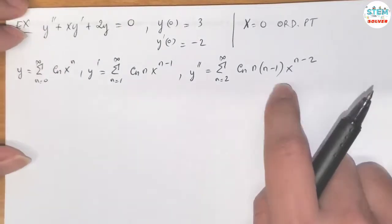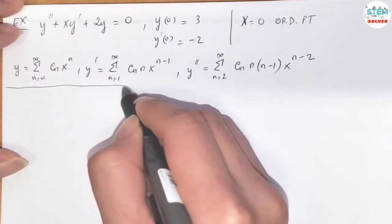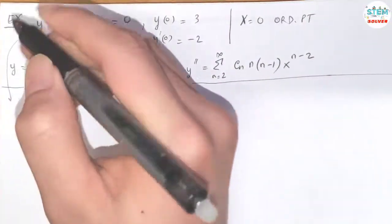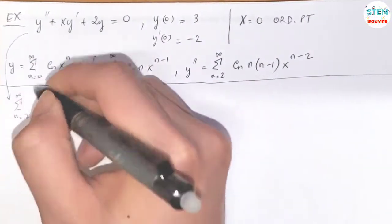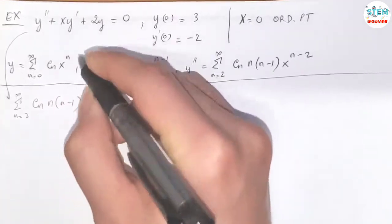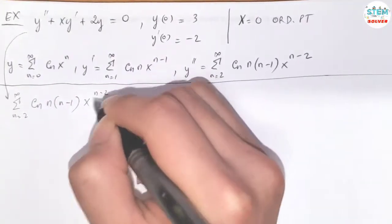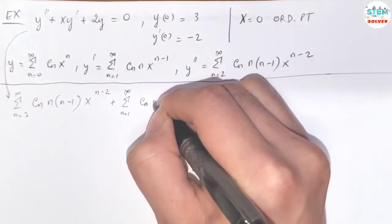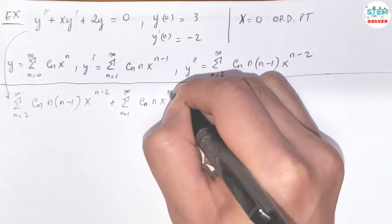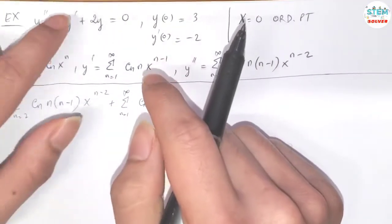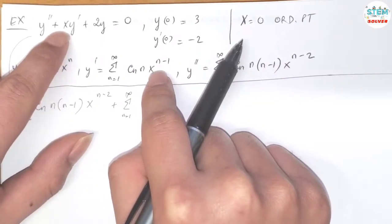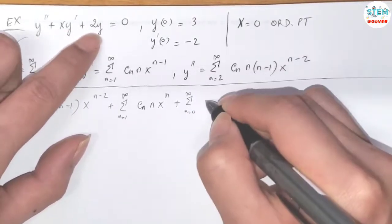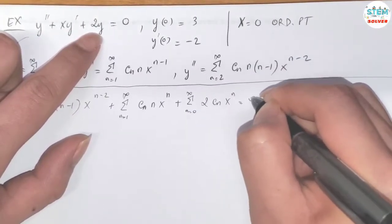Now we are going to plug this into the equation. I have the power series from 2 to infinity: c_n, n(n minus 1), x to the n minus 2, plus the power series from 1 to infinity: c_n, n, x to the n — because x times x to the n minus 1 adds the exponents to give x to the n — plus the power series from 0 to infinity: 2c_n x to the n, equals 0.